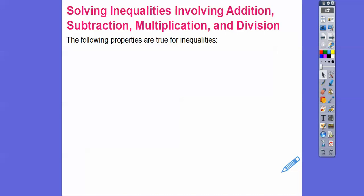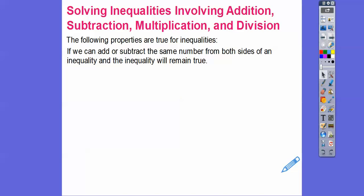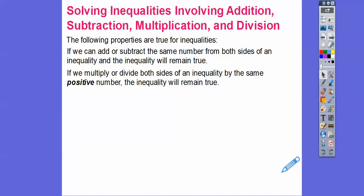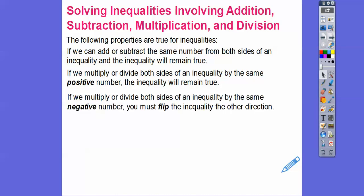Your textbook does a lot of exploratory discovery stuff and I'm skipping that. I'm just going to jump right to the chase. The following properties are true for inequalities. We can add or subtract the same number from both sides of an inequality and the inequality is still true. If we multiply or divide both sides by a positive number, the inequality stays in the same direction. However, when we multiply or divide both sides by a negative number, you have to flip the inequality — it changes direction.